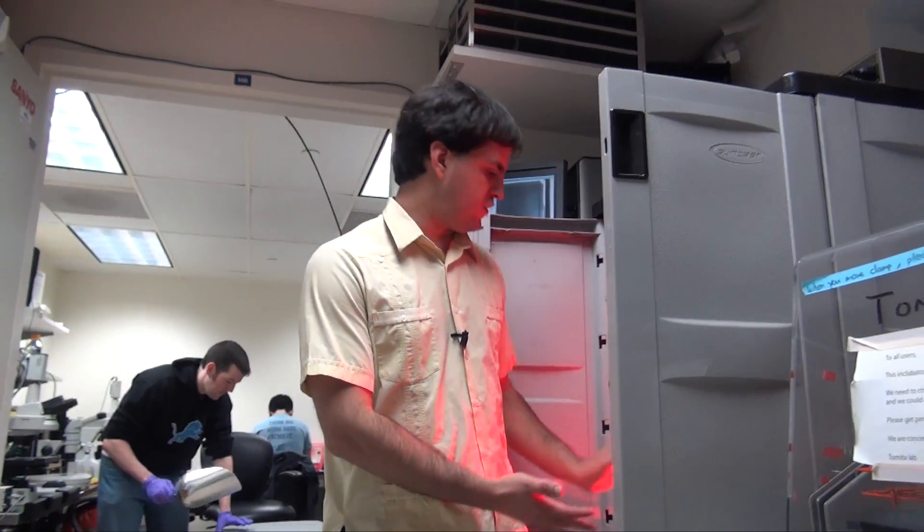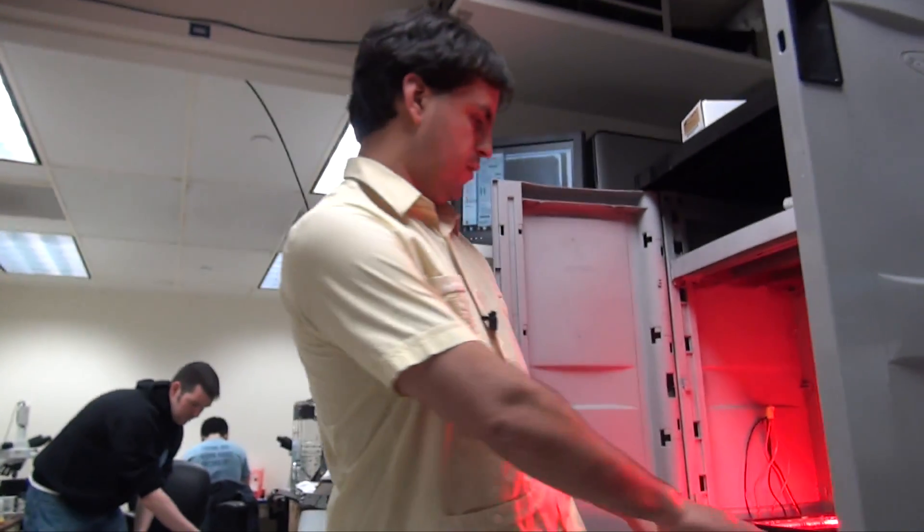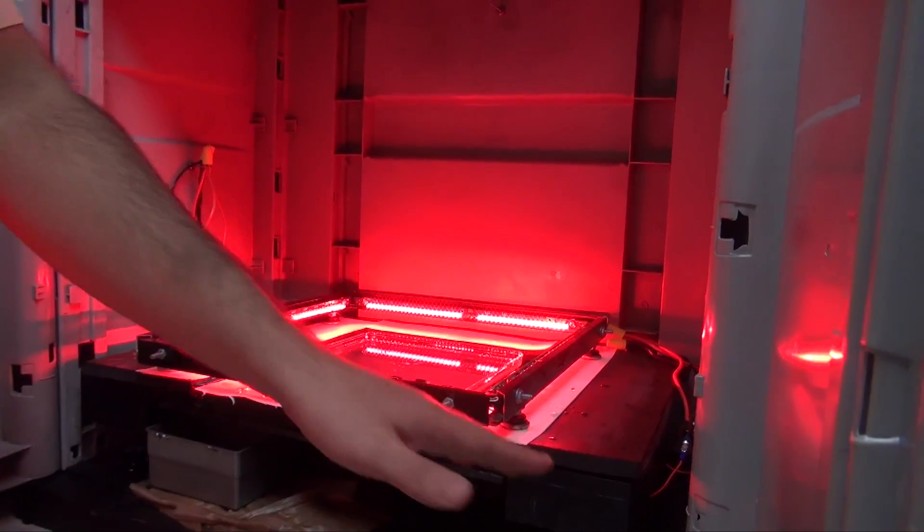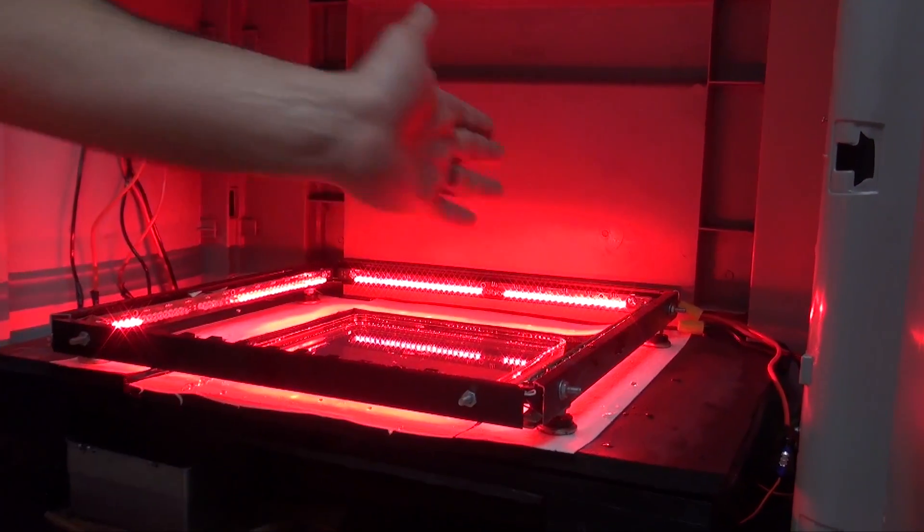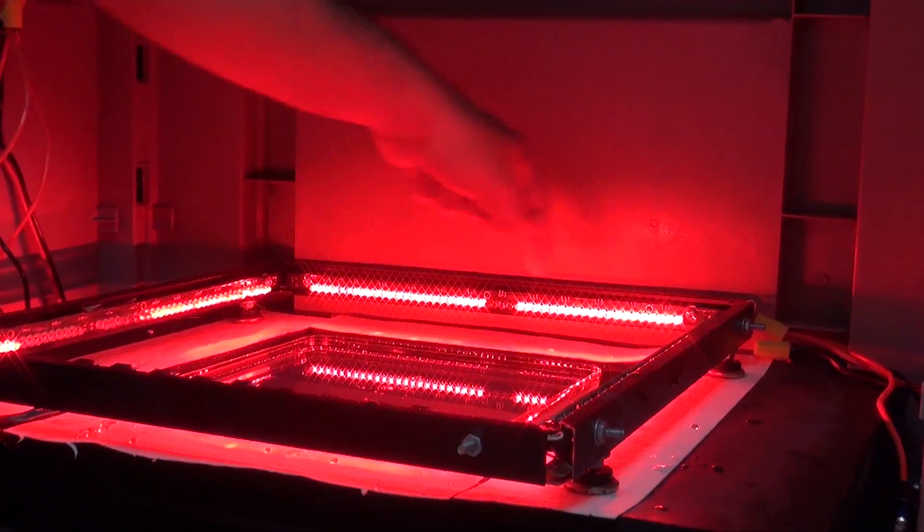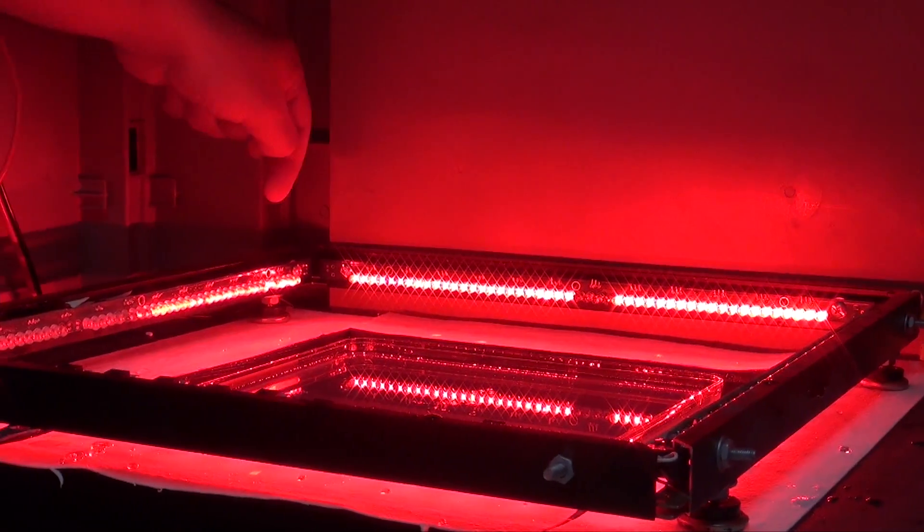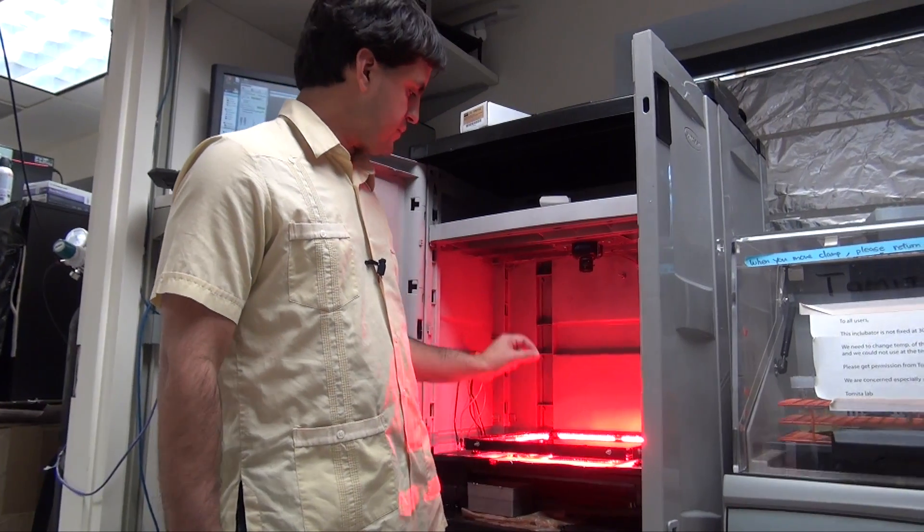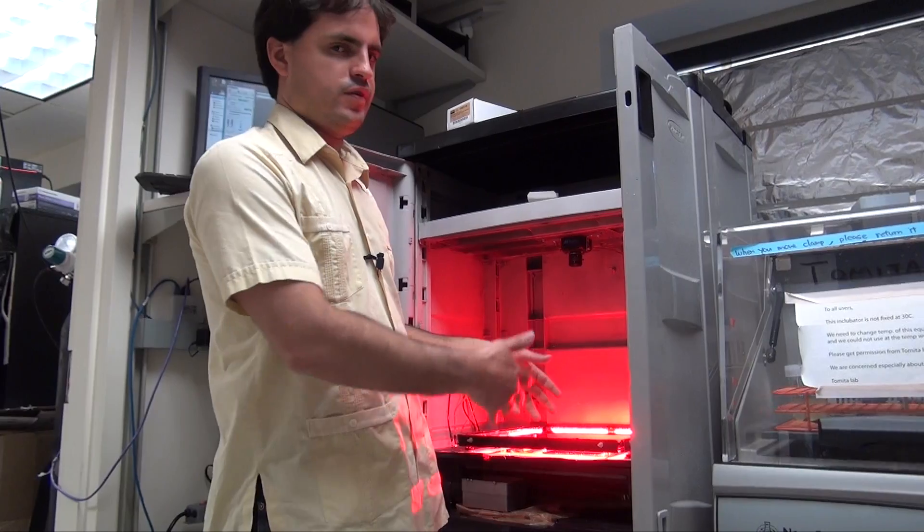And essentially what this is is simple. It's a metal slab that allows us to create a temperature gradient. So it goes from cold side here to the warm side. Then we can put a plate in the middle and we can put animals in the middle of that plate. The red lights are just allowing us to see the animals.